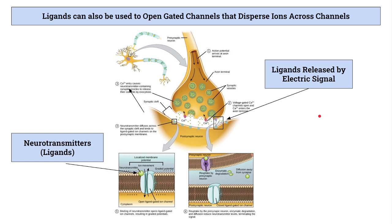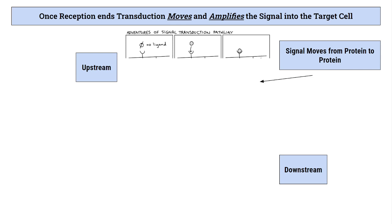Ligands can also open gated channels that disperse ions across the membrane — this is actually how your neurons communicate with each other. Here you can see synaptic vesicles carrying ions. The ligand can bind to calcium transmitters, open them up, and allow ions to flow through. This is a different type of ligand communication: instead of activating proteins inside the cell, it opens up proteins so that calcium can flow from one neuron to another, similar to the cardiac cells from the first lecture.